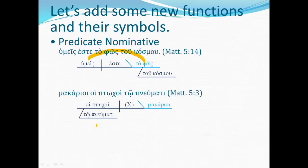In diagram form, it looks like this: the poor in spirit, here's the understood verb, are blessed. So makarioi is predicate nominative. Some people like to go by part of speech rather than case and would call to phos a predicate noun in the first example, and makarioi a predicate adjective rather than predicate nominative. I'll call them predicate nominatives for the purposes of this video.